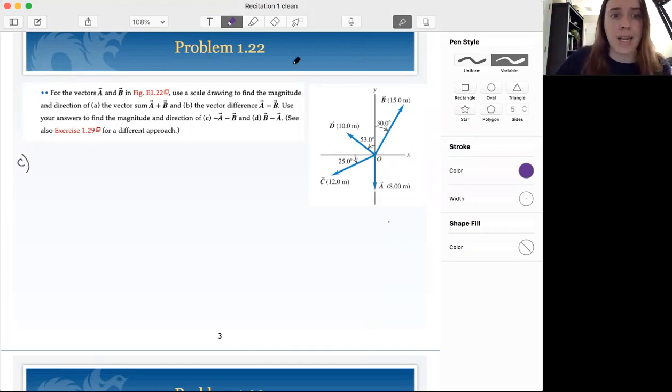We want to use our answers from parts A and B to find the magnitude and direction of negative A minus B and B minus A. So negative A minus B.